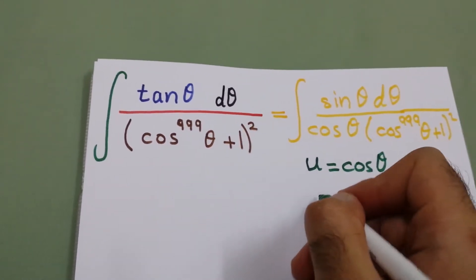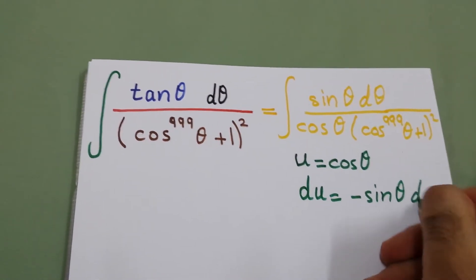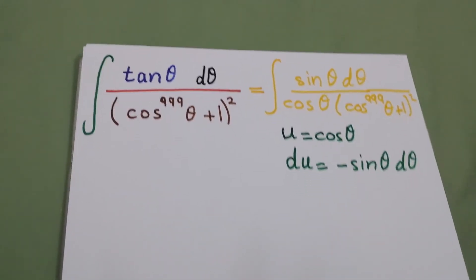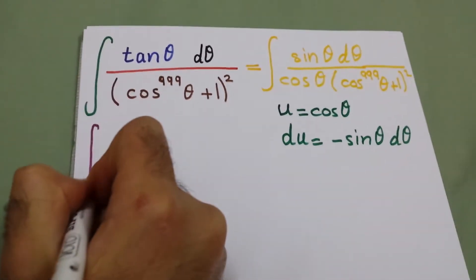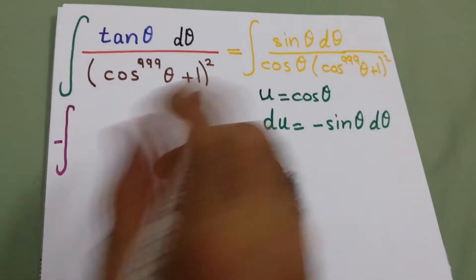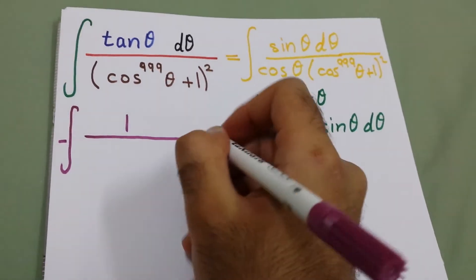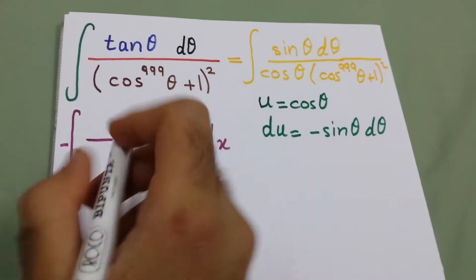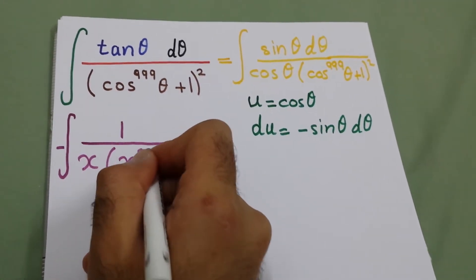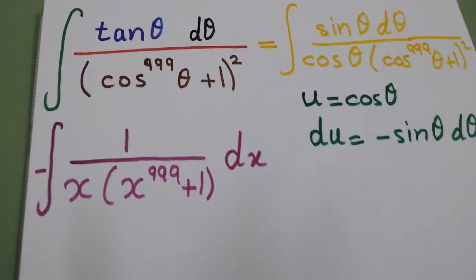Now we will do a substitution: we will put u equal to cosine theta, so du will be minus sine theta d theta. Now the integral will become minus, and in the numerator we just have one, with the denominator being x times x to the power 999 plus one.